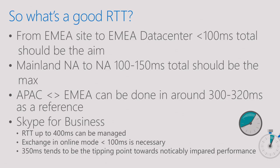To give generic figures: if you're at a European site connecting to an EMEA data center, you should be looking at around 100 milliseconds total — I traced from home and it was about 30-odd milliseconds to Dublin. North America: roughly 100 to 150 milliseconds maximum, and it should be much lower than that. APAC to EMEA is our longest route, and that can be done in around 300 to 320 milliseconds. Our services will generally work over that length of latency, with the exception of Exchange in Online mode which needs to be much lower. The system is designed to work connecting end to end — it's a global service.